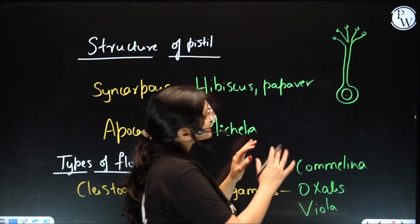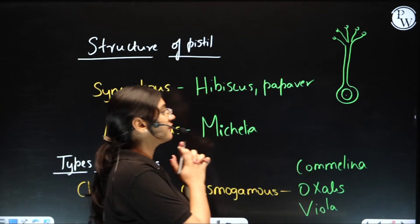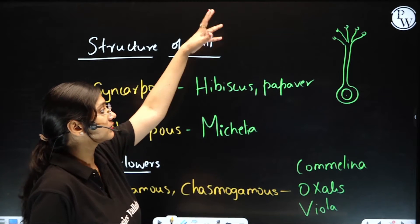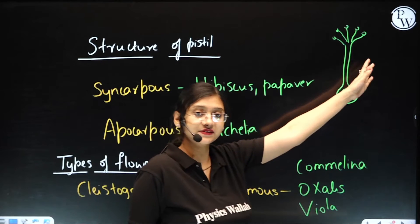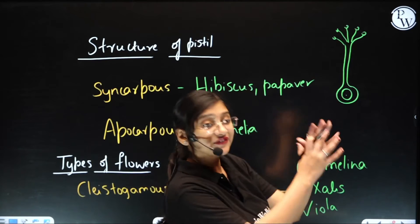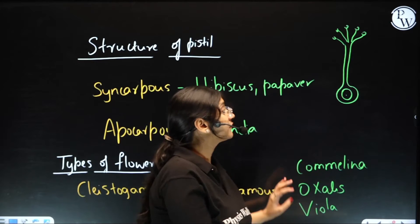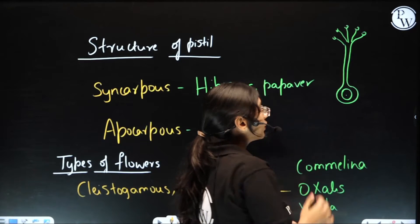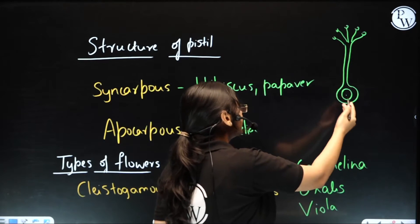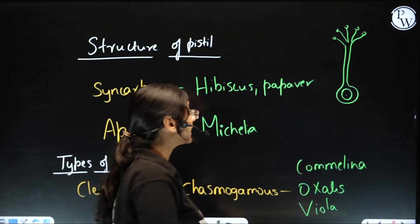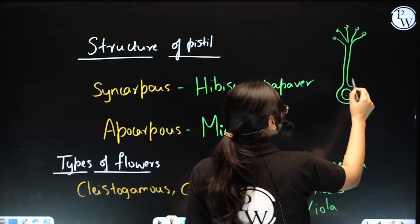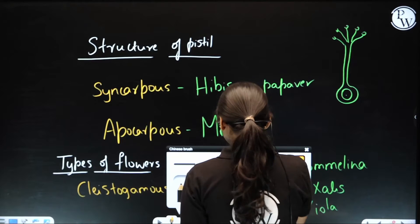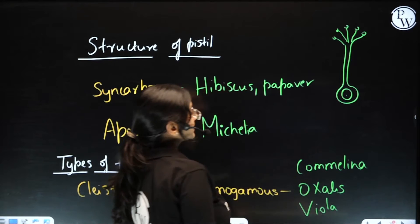In the case of Hibiscus, it is sort of confusing because if you just see the stigma of the Hibiscus pistil, it is actually free — it does not look fused. But we are not supposed to see the stigma; we are supposed to see the carpel, especially how the ovary is. So if you just do the dissection of the pistil of Hibiscus, we get to see that the carpels are fused. So Papaver and Hibiscus are examples for syncarpous.